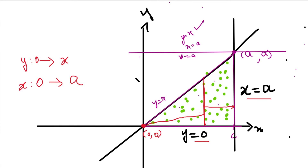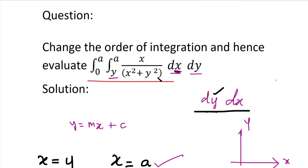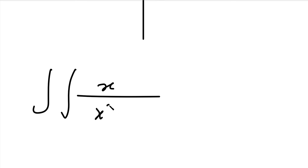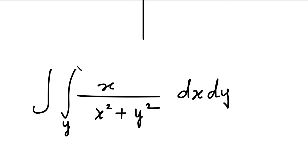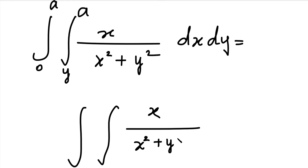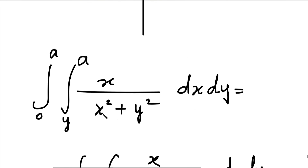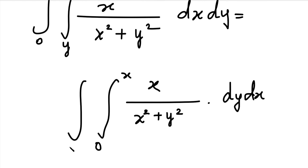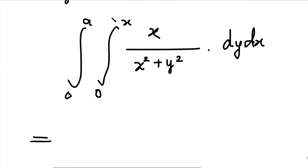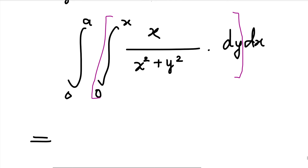Now we find the double integration value. The original question is the double integral of x divided by (x squared plus y squared) dx dy. After changing the order, the inner integration is with respect to y and the outer with respect to x: double integral of x/(x²+y²) dy dx, with inner limit 0 to x and outer limit 0 to a. In the inner integration with respect to y, x is constant.